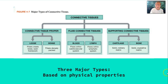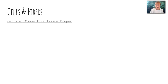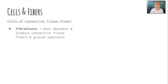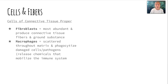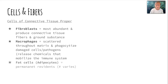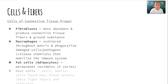Here are the major types of connective tissue: connective tissue proper, fluid connective tissues, and supporting connective tissues, each based on their physical properties. The cells that make up connective tissue proper include fibroblasts — the most abundant — which produce connective tissue fibers and ground substance. Macrophages are scattered throughout the matrix and phagocytize damaged cells and pathogens by releasing chemicals that mobilize the immune system. Fat cells, also known as adipocytes, are permanent residents that provide cushion and protection. Finally, mast cells are small, mobile cells found near blood vessels that help fight off injury and infection.